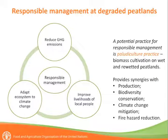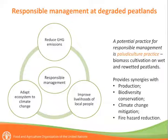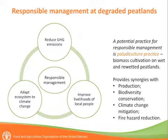Responsible peatlands management should reduce greenhouse gas emissions, adapt ecosystems to climate change, and improve livelihoods of local people. For each country context, these can be prioritized differently, but overall three core benefits can go together. A potential practice for responsible peatlands management is paludiculture — biomass cultivation on wet and rewetted peatlands — which provides synergies for production, biodiversity conservation, climate change mitigation, and fire hazard reduction. More details about paludiculture practices will be shared in the next presentations.